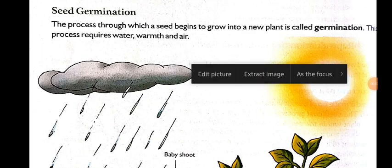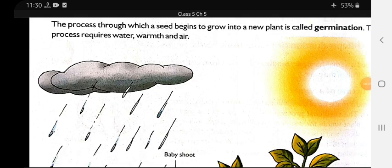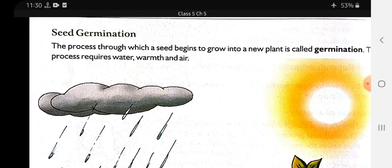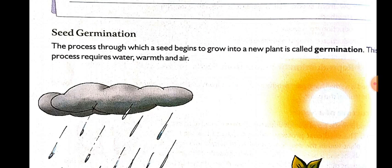Hello students, today we are going to start the next topic of this chapter — seed germination. Seed germination is simply the beginning of plant life. The plant starts from the very beginning, that is from germination. It is the stage at which the plant takes birth. The process in which a seed begins to grow into a new plant is called germination.